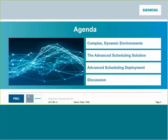I want to jump into the presentation itself. I want to talk about how manufacturing environments are complex and dynamic. We're going to break down that term because those words complex and dynamic are thrown around a lot. I want to break that down to talk about what it means and how advanced production scheduling addresses both aspects of it. And that will take us to the advanced scheduling solution.